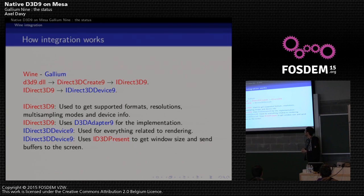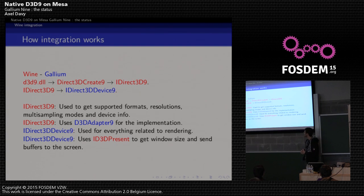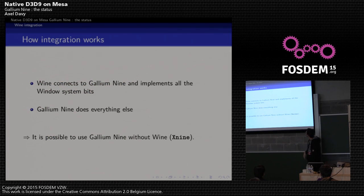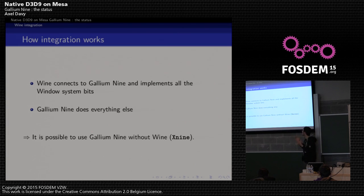Alternatively, all window system code could be in Mesa but compiled with the Wine compiler — a solution initially taken for the D3D11 state tracker that was dropped a few years ago. We can also have D3D9 support without Wine: we have a demo called X9 that implements all the window system bits needed by Wine and talks to Gallium Nine directly, giving access to the API without Wine.